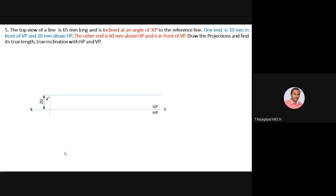Point A is 10 mm in front of VP and 20 mm above HP — so A-dash is 20 mm above XY and A is 10 mm below XY. Correspondingly, locus of A-dash and locus of A are known. For other end B, which is 60 mm above HP, draw locus of B-dash 60 mm above XY.